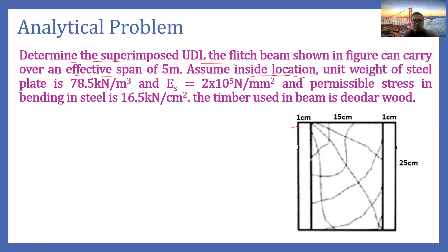Because there are steel plates, the data for steel plates is also given. The unit weight of the steel plate is 78.5 kilonewton per meter cube. The value of Es, the Young's modulus of elasticity of steel, is 2 × 10⁵ newton per mm square. The permissible stress in bending in steel is 16.5 kilonewton per centimeter square.